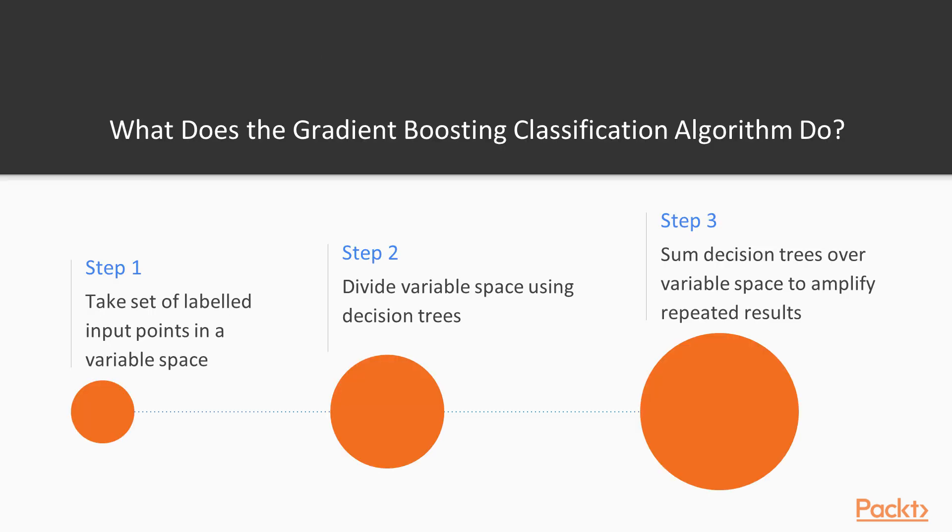So what does the gradient boosting classification algorithm do? It takes a set of labelled input points in a variable space, divides the variable space using decision trees, and then it sums these different decision trees over the variable space to amplify repeated results.